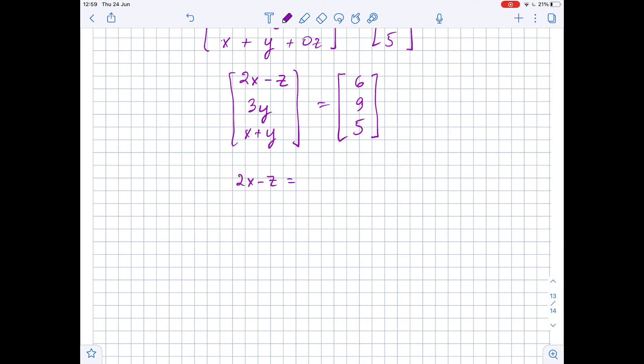equals the first entry of the right side matrix, so 6. Similarly, 3y = 9 and x + y = 5. So this is our system of linear equations which if we solve, we find x, y, and z.